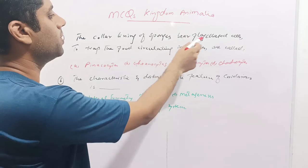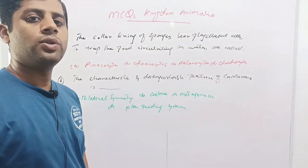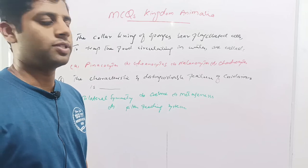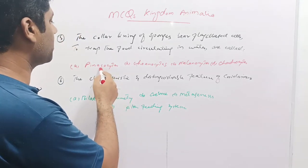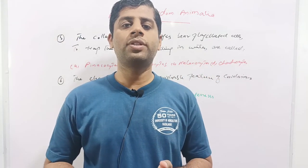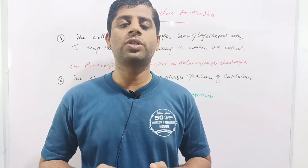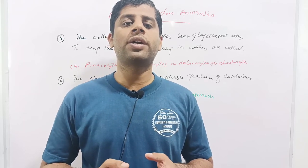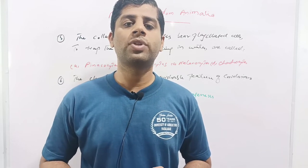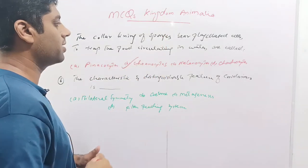The collar lining of sponges bears flagellated cells, basically used to trap food circulating in the water during the water current system. These cells are specialized to trap food circulating inside the cavity of the sponges called the spongocoel. Given options are pinacocytes, choanocytes, melanocytes, or chondrocytes. During the water current system, water enters through the pores (ostia) into the spongocoel. Specialized internal lining cells bear flagella to trap circulating food. These cells are known as choanocytes, so option B is correct.